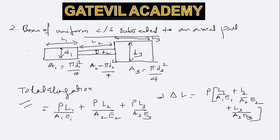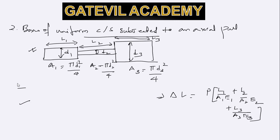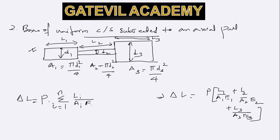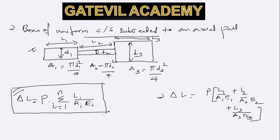Here we have taken three bars connected in series. For multiple interconnected bars, we can write a general formula: delta L equals P times summation from i equals 1 to n of Li over (Ai times Ei). This is the general expression for n interconnected bars of uniform cross-section subjected to an axial pull.